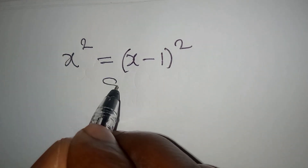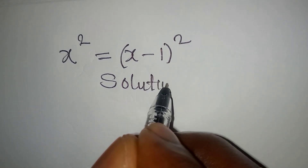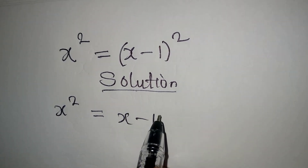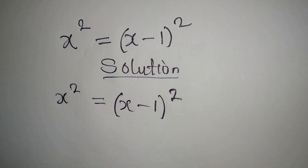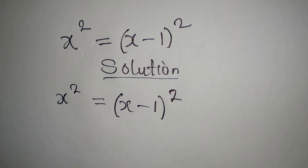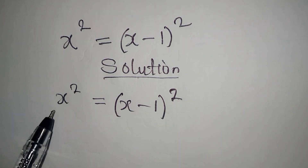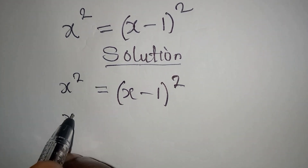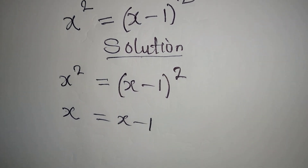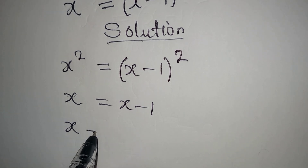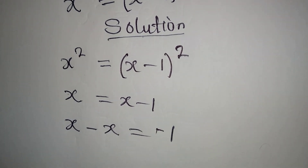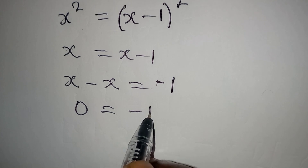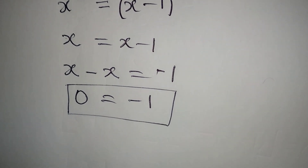Let us provide the solution to this problem. We have x squared equal to x minus 1, and this is to the power of 2. Remember that we always say if the powers are the same, we can equate the bases. Now let me show you how this will lead us astray. If we equate the bases — x equals x minus 1 — we get x minus x equal to minus 1, giving us 0 equals minus 1, which is impossible.